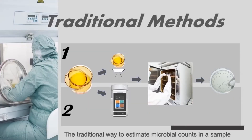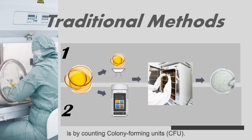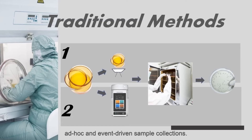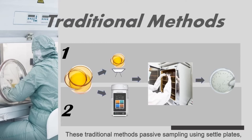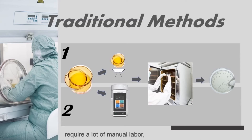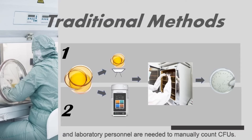The traditional way to estimate microbial counts in a sample is by counting colony-forming units. Current airborne microbial monitoring processes use interval, ad hoc, and event-driven sample collections. These traditional methods — passive sampling using settle plates and active air sampling using sample collectors — require a lot of manual labor, complex steps for usage, excessive time for incubation, and laboratory personnel to manually count CFUs.